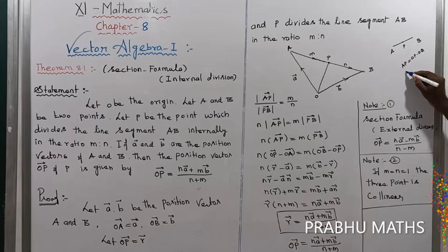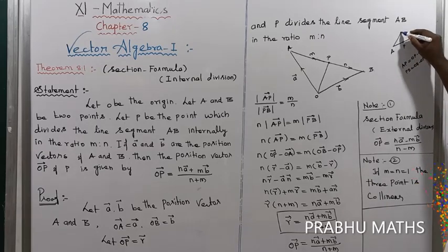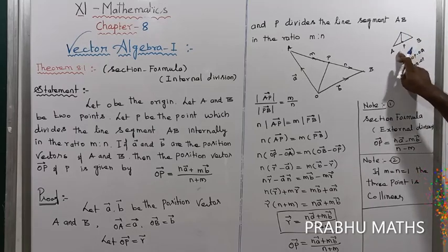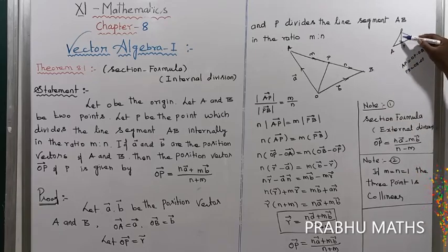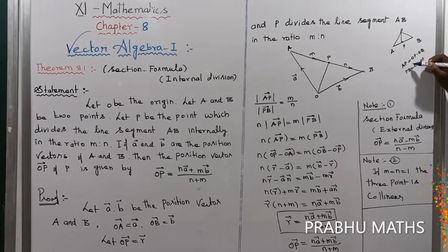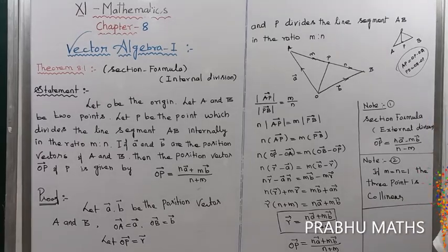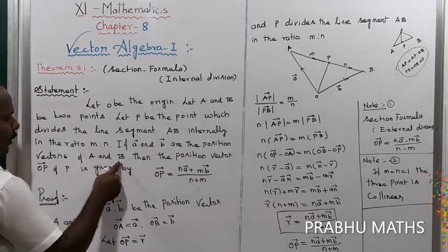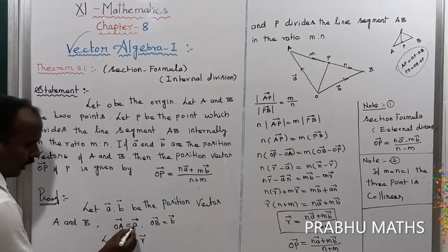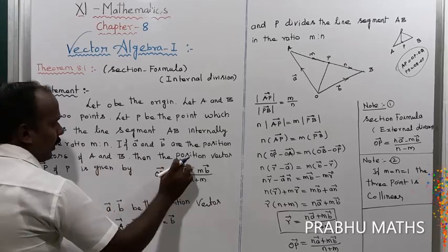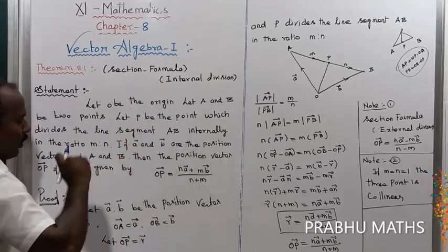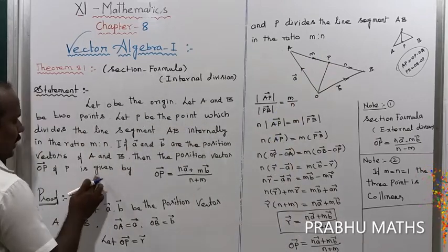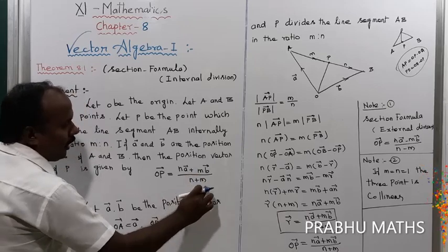The position vector AP is equal to OP minus OA, and PB is equal to OB minus OP. The position vector is denoted by R. Since OA equals vector A and OB equals vector B, the position vector of OP is given by: OP vector equals NA plus MB vector, divided by M plus N.